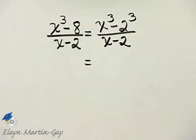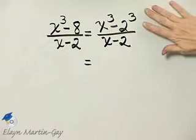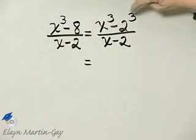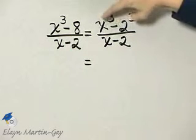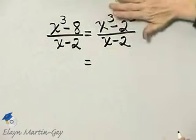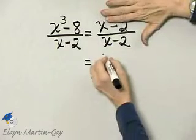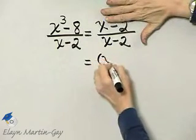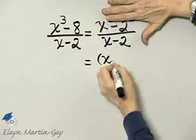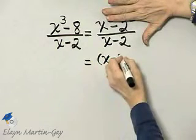Now I've got to have everything factored. So in the numerator, remember how you factor the difference of cubes. It's a binomial times a trinomial. The binomial is if I basically just cover up these cubes, it's x minus 2.